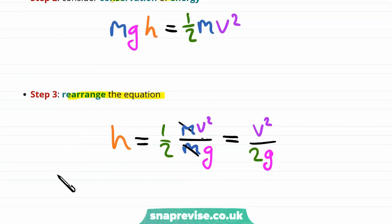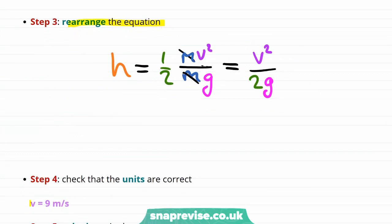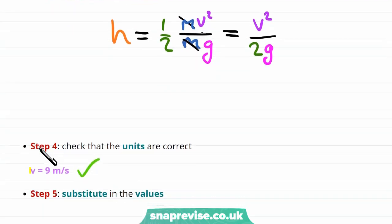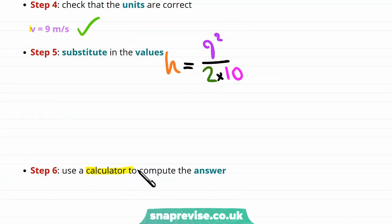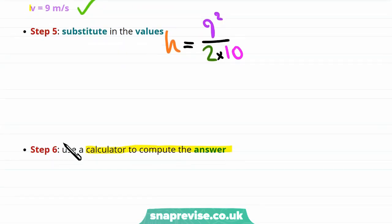This gives us h = v² divided by 2g. With the velocity of 9 meters per second already in correct units, we substitute the values in and use a calculator to find that the height is equal to 4.05 meters.